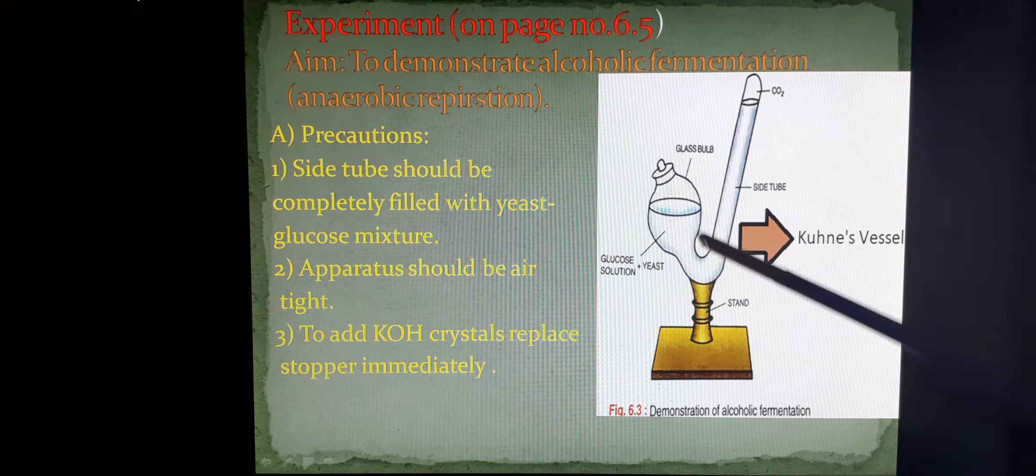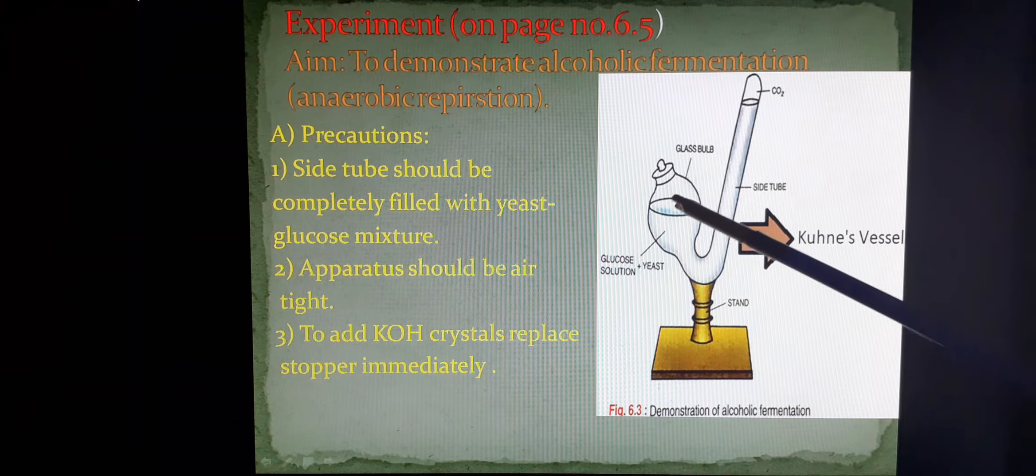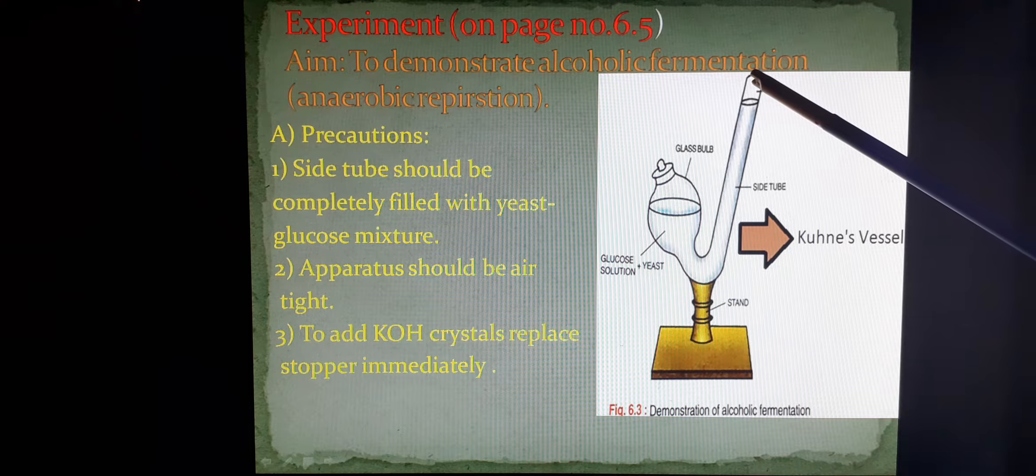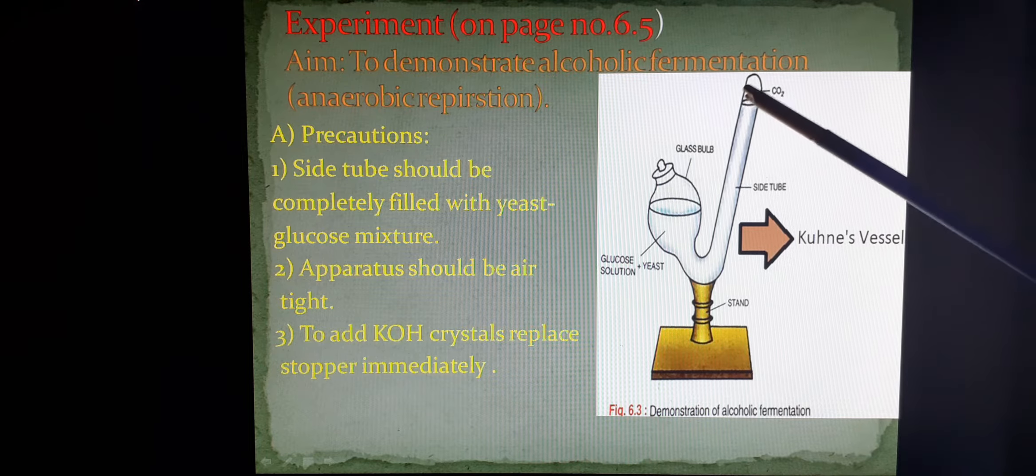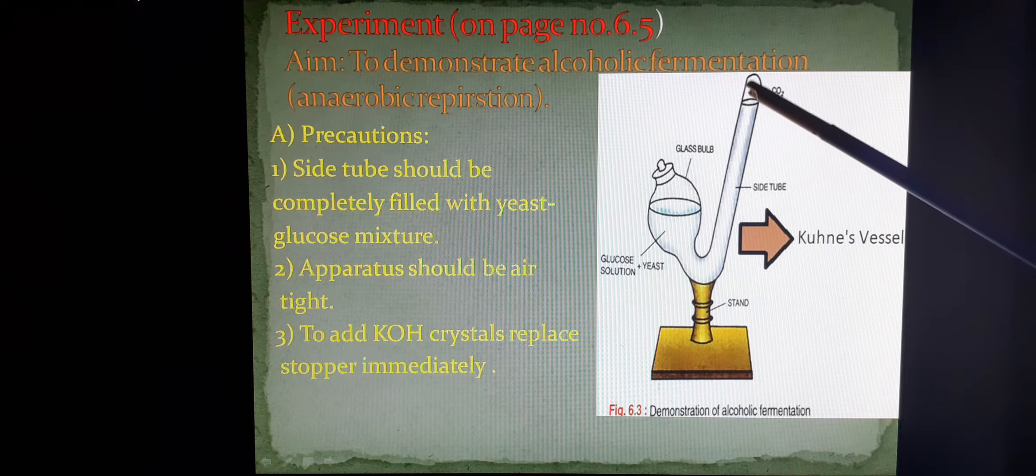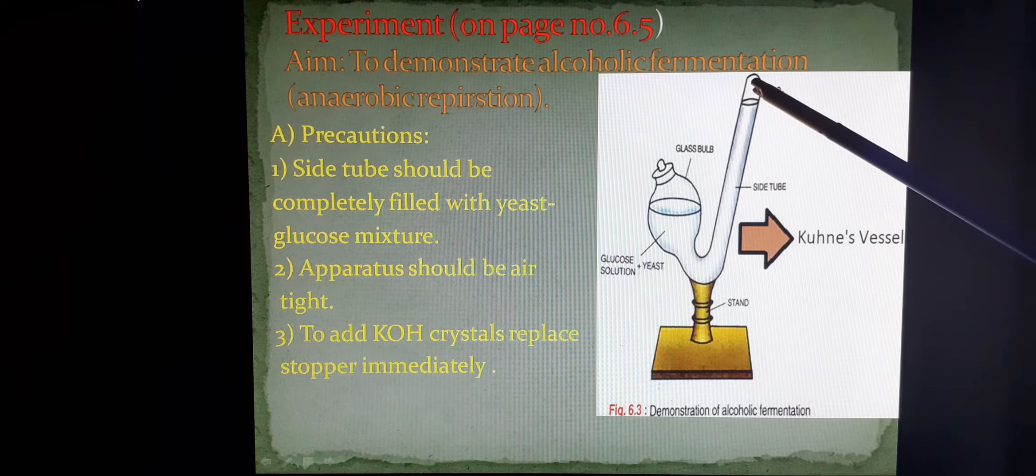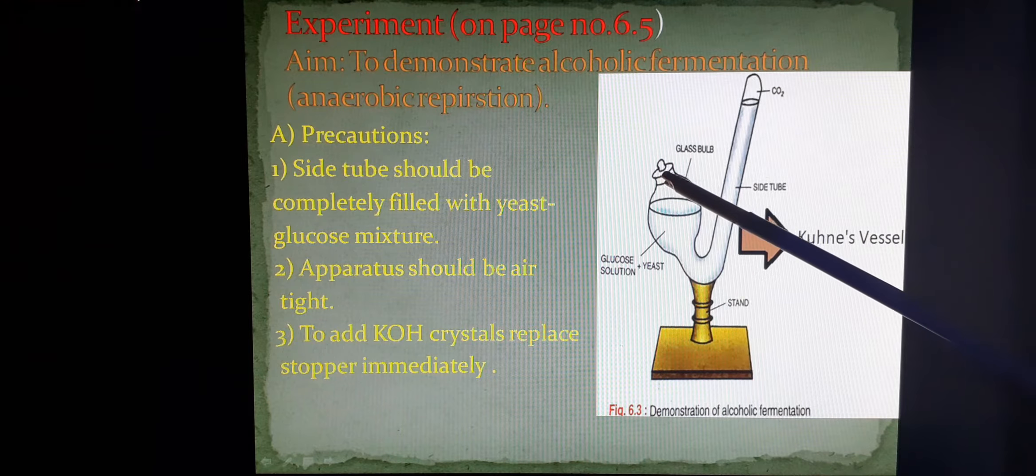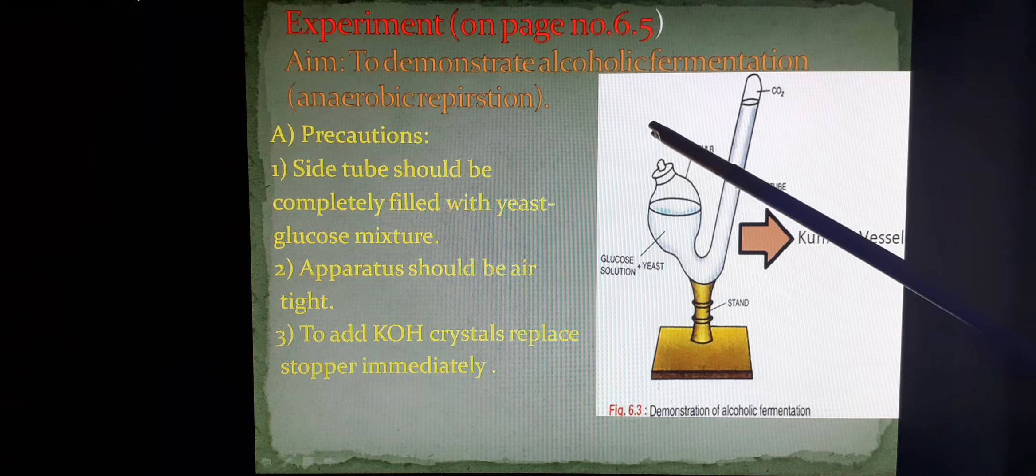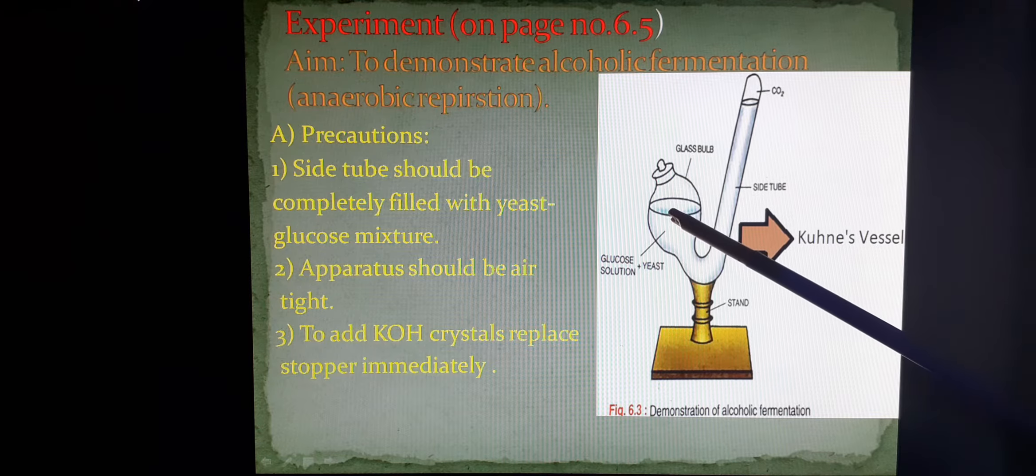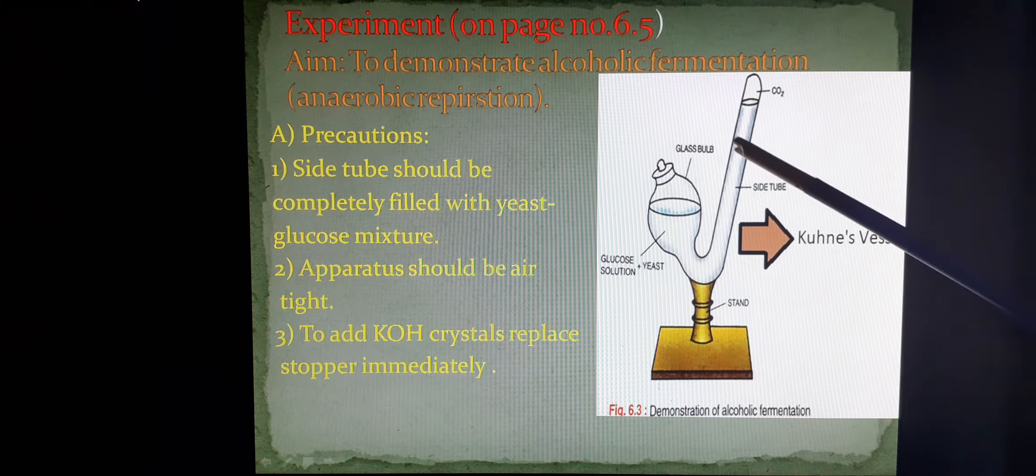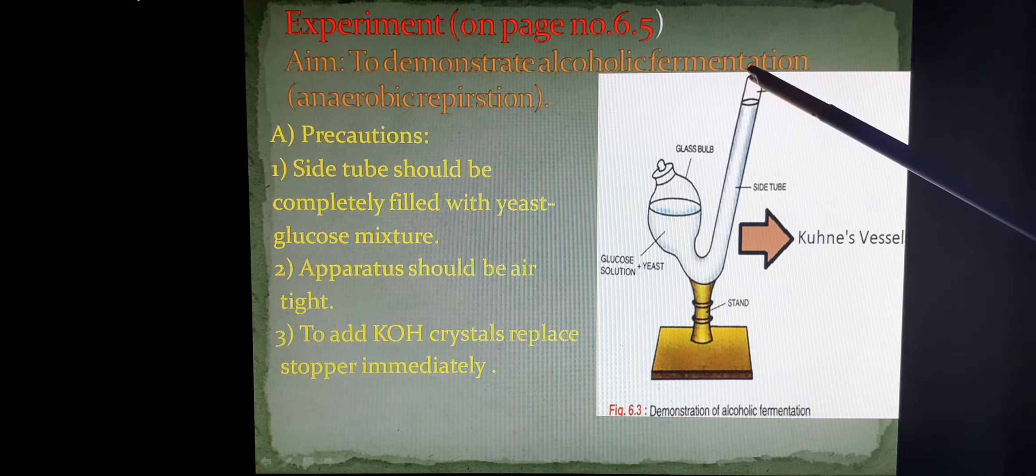Keeping this whole setup for a few hours, what we observe is there is a frothy appearance in this area and the level of the mixture which was at the tip in the beginning has come down, making a gap over here. Frothy appearance and a gap indicates that some gas has been released in the setup. To check that, we remove the stopper and place potassium hydroxide and immediately close the lid. When we open it, we can smell the alcohol. The potassium hydroxide has absorbed the gas and the mixture in this side tube rises up.